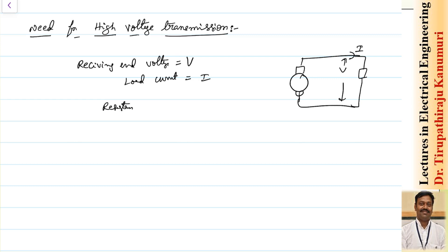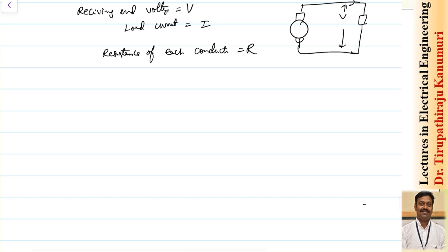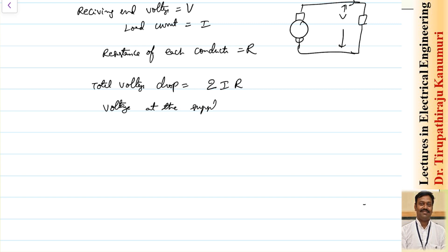My receiving end voltage is equal to V and my load current is equal to I amperes. The resistance of each conductor, let us take it as R — R is the resistance of each conductor in ohms. The total voltage drop will be equal to the current I multiplied by resistance R, multiplied by two conductors, so it will become 2IR. The supply voltage, or voltage at the supply end, will be the load voltage plus the voltage drop — minimum this much voltage should be transmitted from the source.